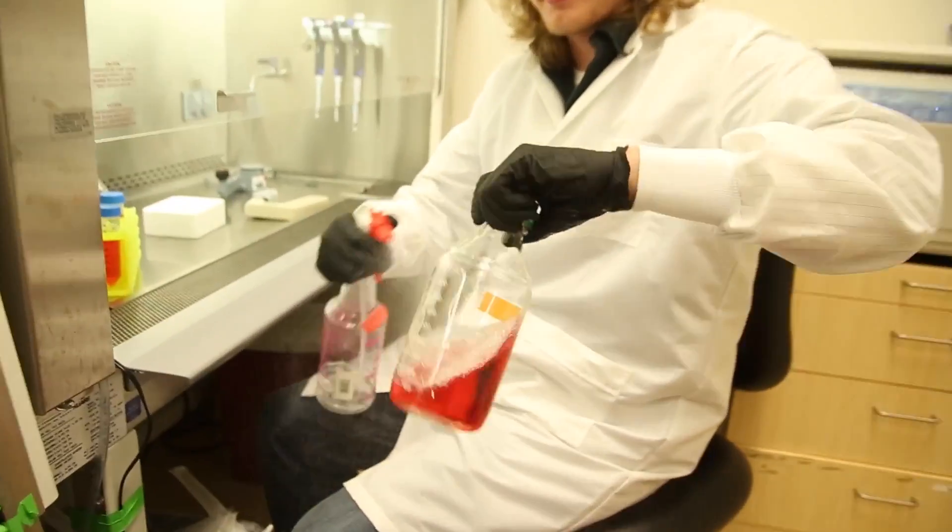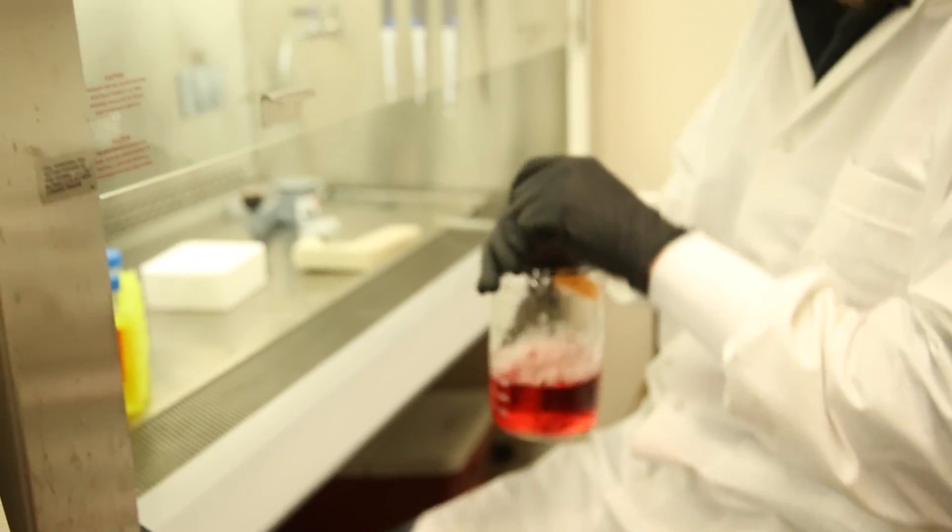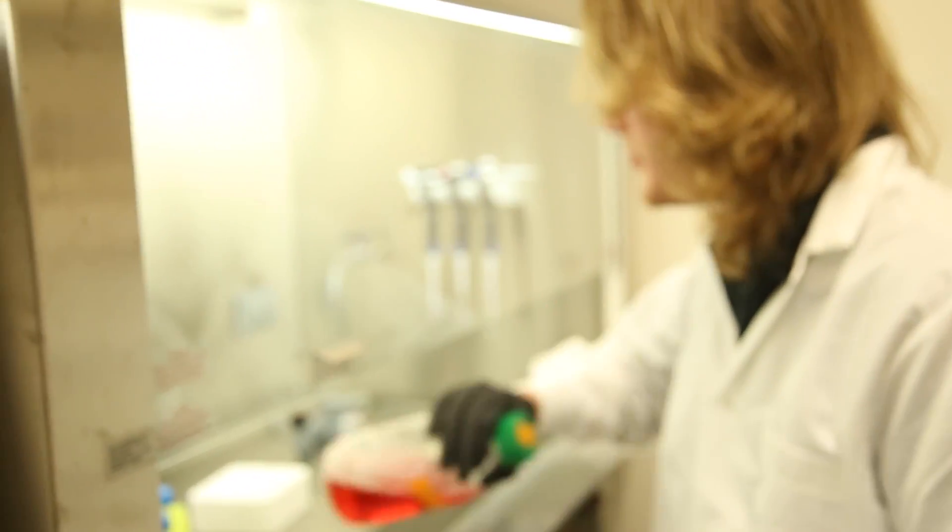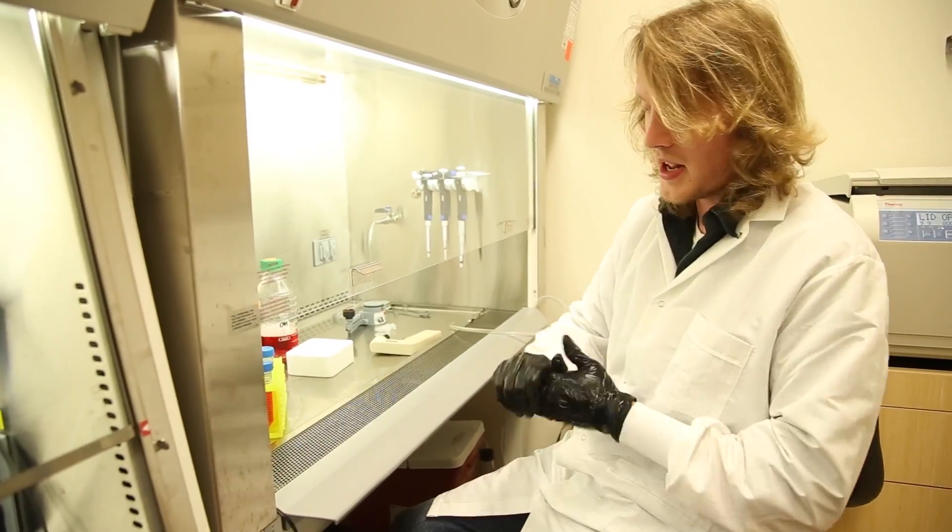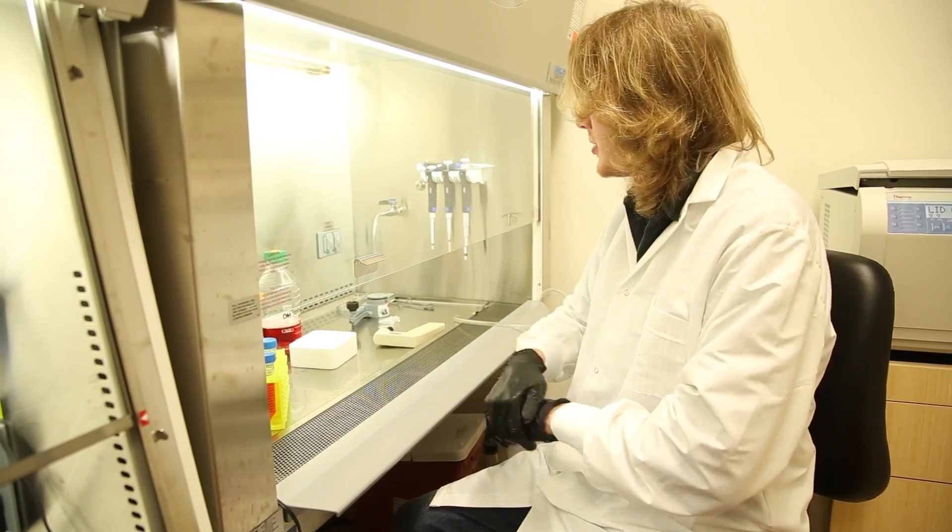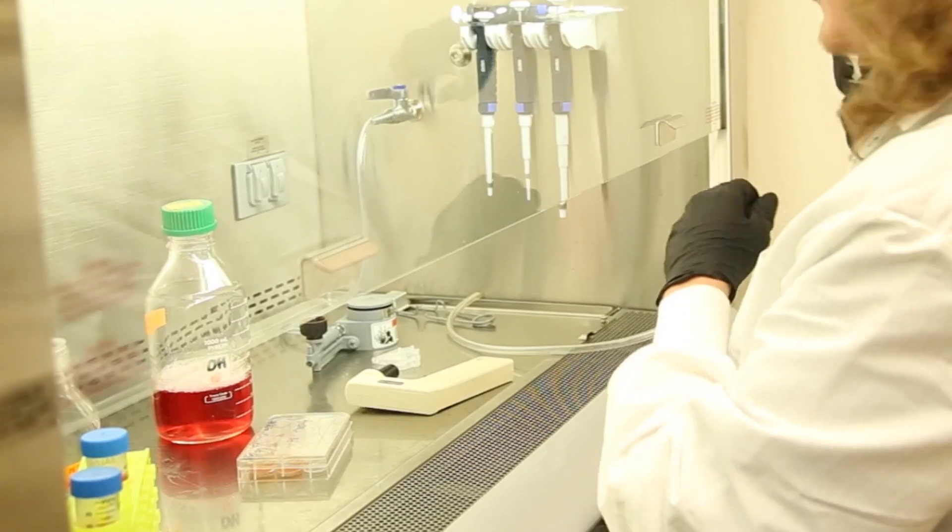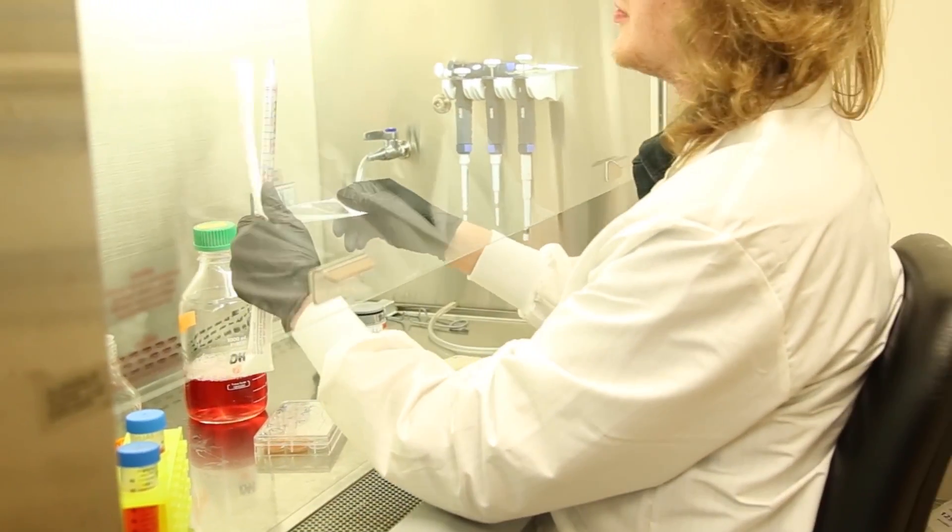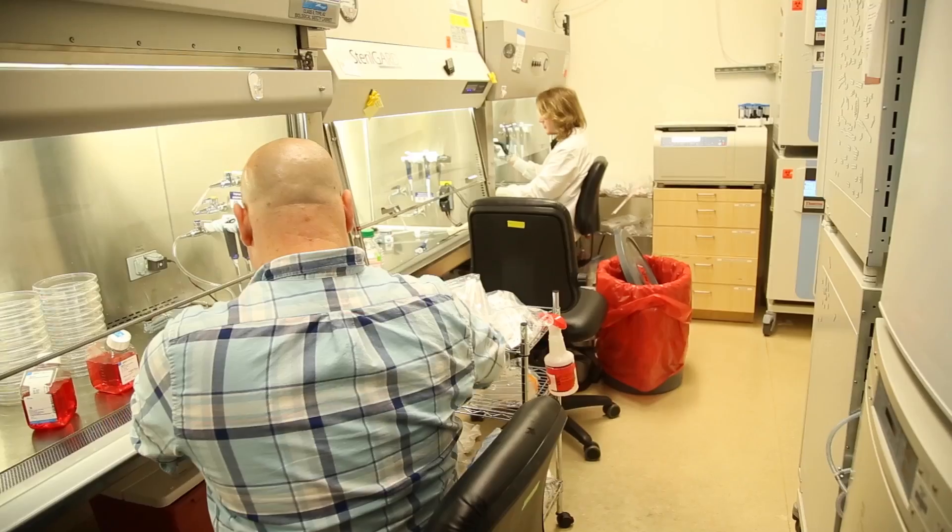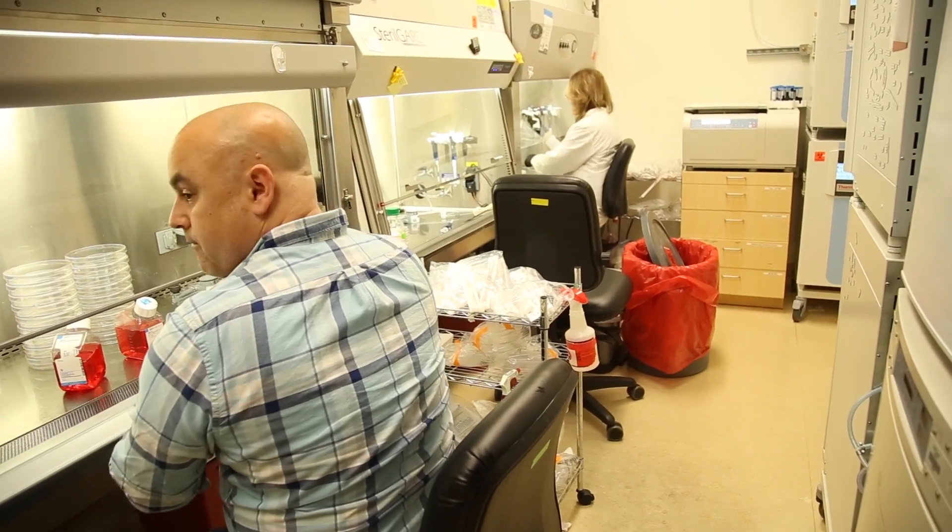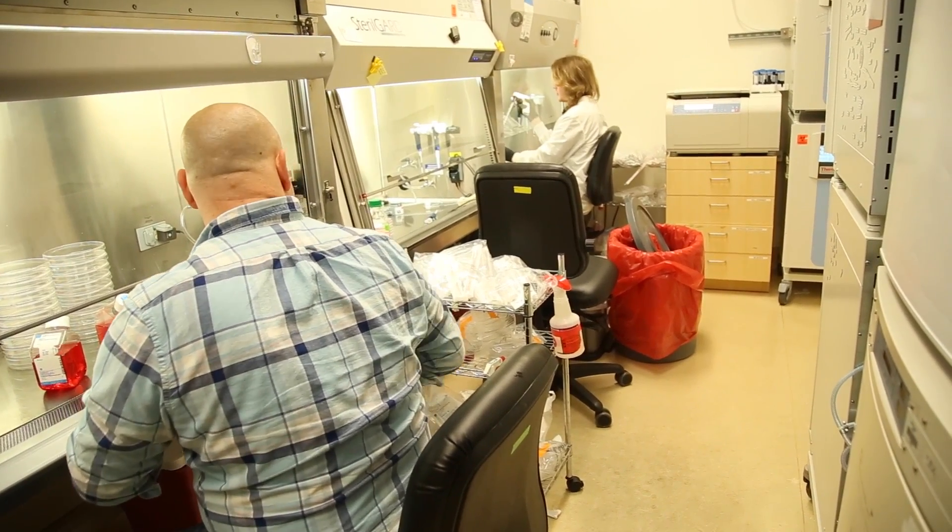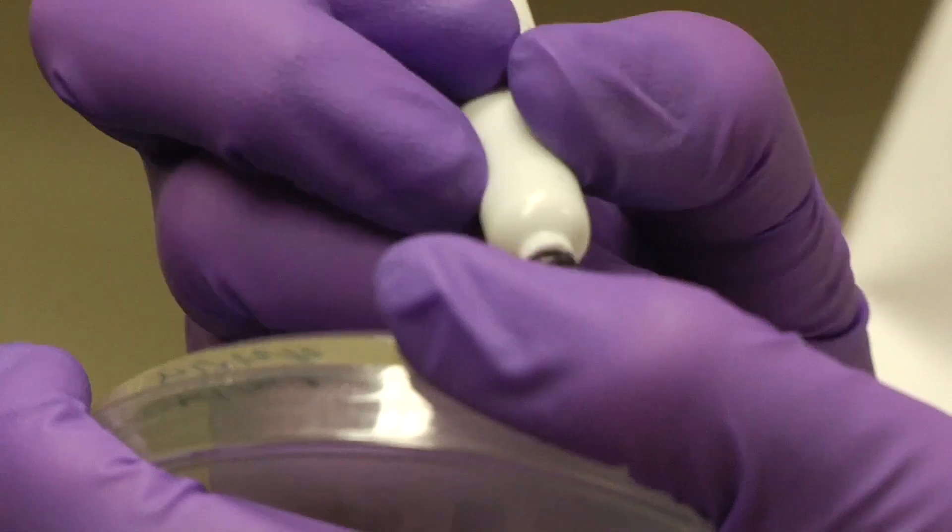We do a lot of cell culture, so we have to keep everything sterile. We have a lot of nutrients in our cells, and if bacteria gets in there, they'll use those nutrients too, which would be quite bad for our experiments. We do all of our work with cells in what's called a tissue culture hood that allows us to have a sterile environment where we can do manipulations without fear of contamination. That's where a large amount of my work is—just inside the hood.